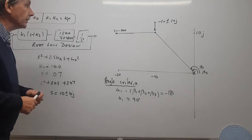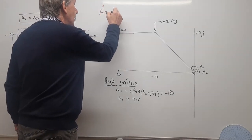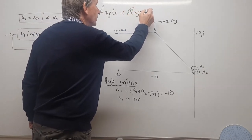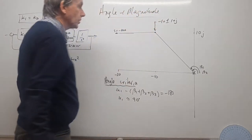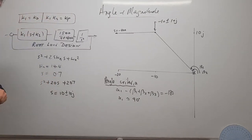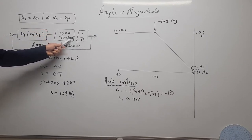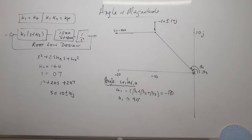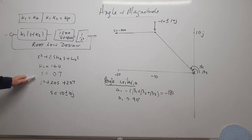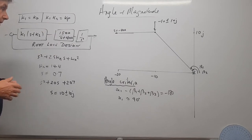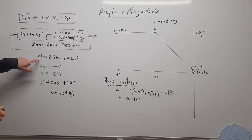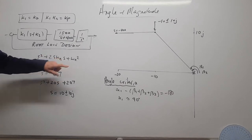Next, we use the angle and magnitude criteria to work out a suitable controller. We've modelled the system with k = 1500 and a pole at −400, plus the 1/s² term. Before plotting the root locus, we define design conditions: we want the dominant complex conjugate roots described by s² + 2ζωn·s + ωn², with ωn = 14.4 rad/s and ζ = 0.7.